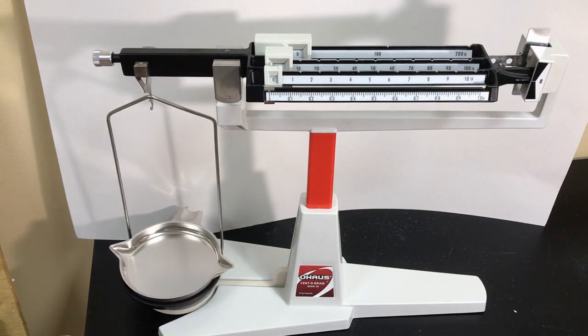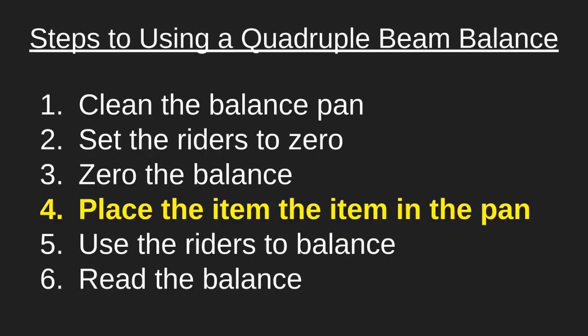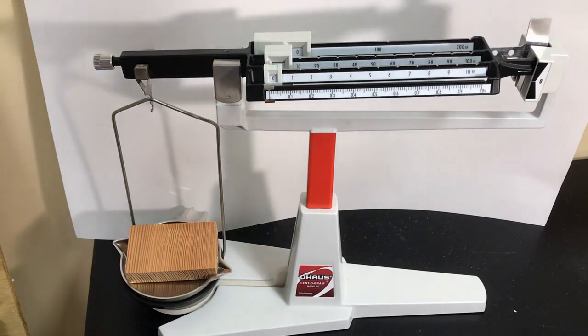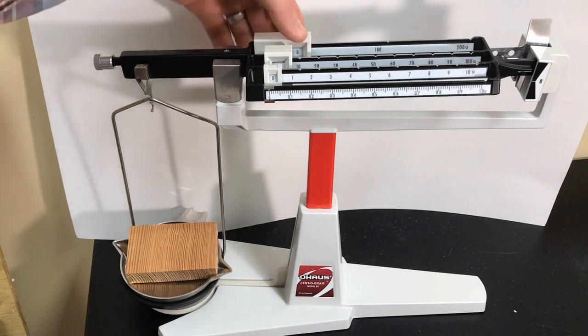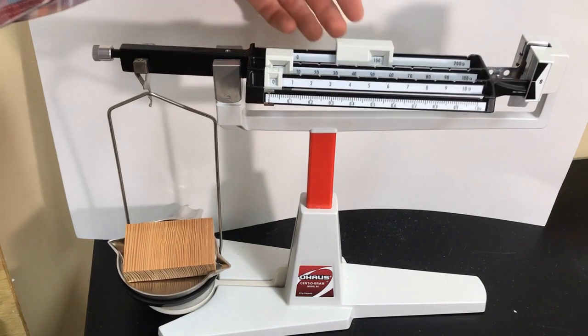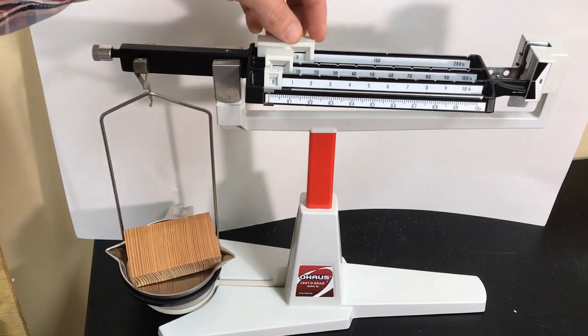And now I'm going to go to step four and I'm going to place my item in the balance pan. There it is. And now it's immediately off balance. So I have to work with these riders here to get it into balance. And I start out back. It's kind of a little bit of trial and error. But I go to 100. That is too much. So we know it's less than 100 grams of mass.